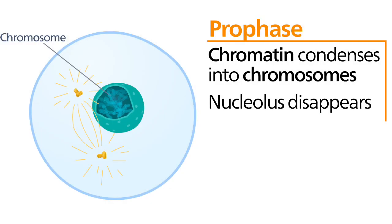Mitosis starts with prophase. In prophase, the chromatin condenses and forms the X-shaped structure called chromosomes. It is also in this stage that the nucleolus disappears and the spindle fibers appear.